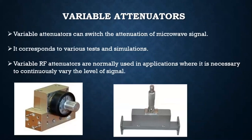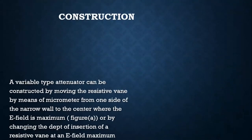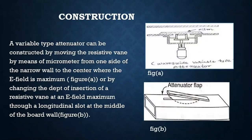Now let's go to the variable attenuators. A variable attenuator can switch the attenuation of a microwave signal and corresponds to various tests and simulations. Variable RF attenuators are normally used in applications where it is necessary to continuously vary the level of signal. A variable type attenuator can be constructed by moving the resistive vane by means of a micrometer from one side of the narrow wall to the center where the electric field is maximum — as seen in figure A — or by changing the depth of insertion of a resistive vane at an electric field maximum through a longitudinal slot at the middle of the broad wall, as shown in figure B.